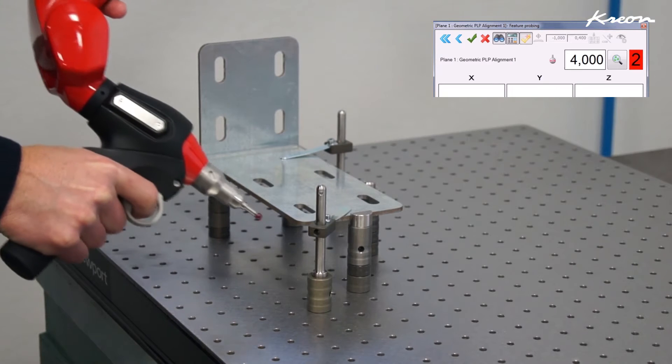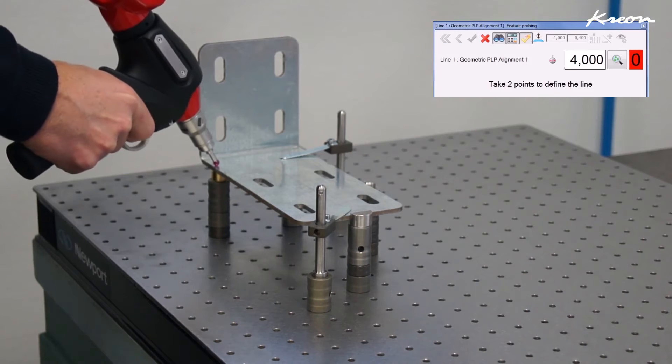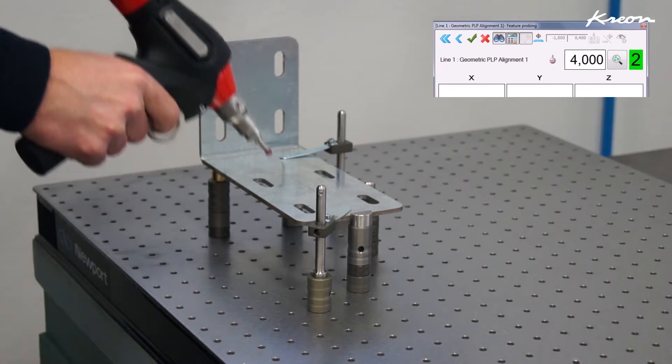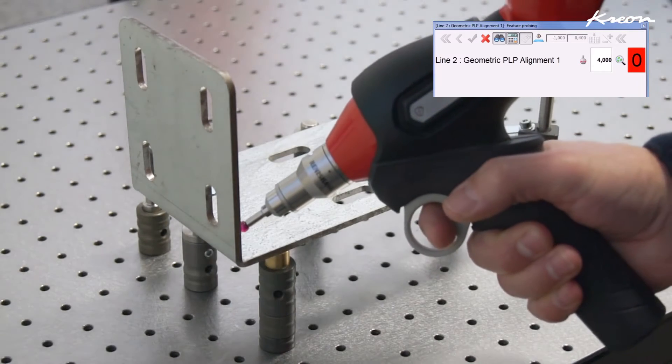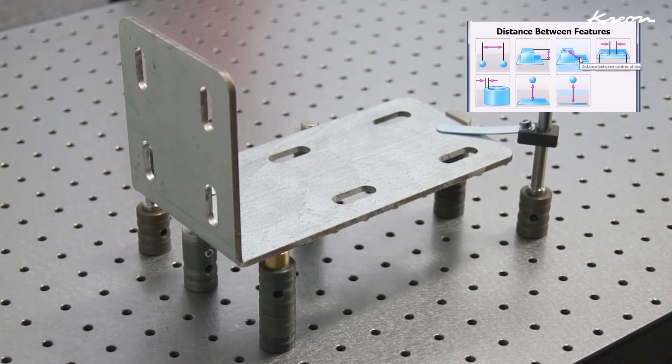For all the features we can choose either to switch automatically to the next feature when enough points have been acquired or to manually decide to take more. For instance, in our case the software switches automatically to the line when we have acquired three points for the plane.